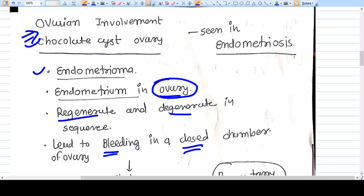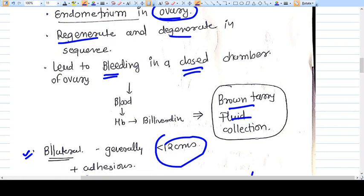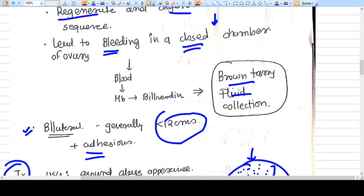This tissue will regenerate and degenerate just like it happens in the uterine cavity along with estrogen and progesterone. Some amount of bleeding is happening every month in a closed chamber-like cyst. This blood collected will be converted into brown tarry fluid collection.